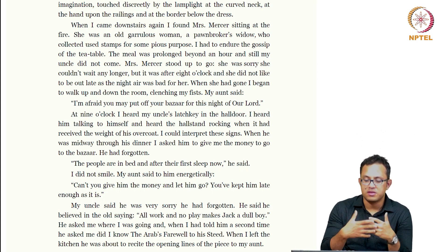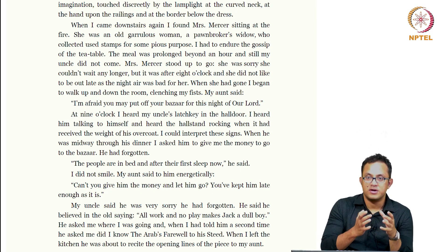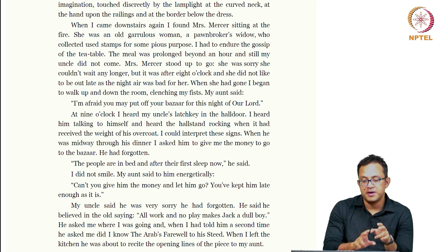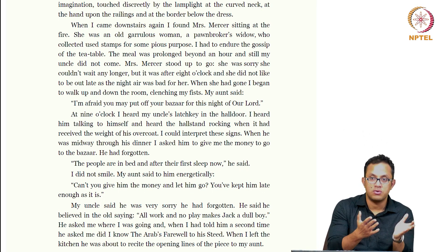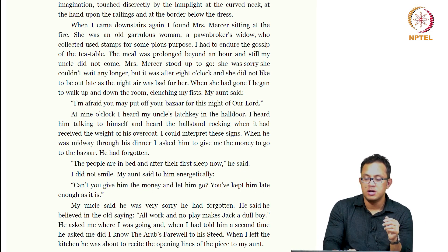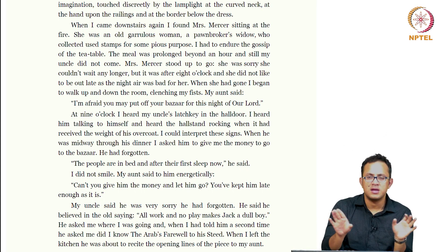There was a lot of gossip from Mrs. Mercer while having tea with the boy's aunt, and at eight o'clock she got up to go because night air was bad for her. Again these are people who prefer to be claustrophobic, who prefer to be indoors. If you look at the spatial differences mapped out: the boy is dying to get out and go to Araby, whereas Mrs. Mercer tries to avoid any exposure to the night air. The adult proclivities and the childlike proclivities are very clearly mapped out differently.